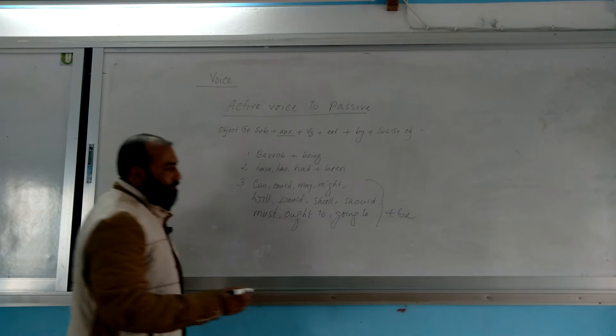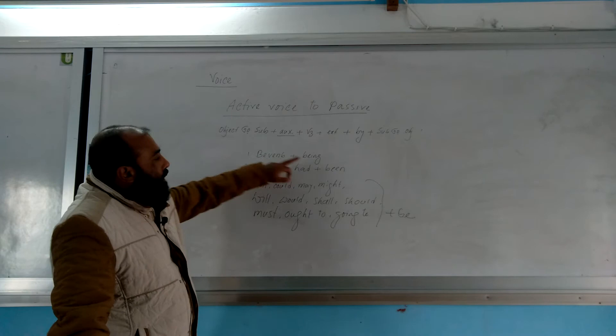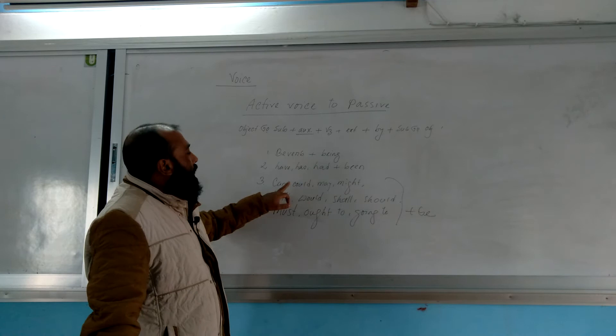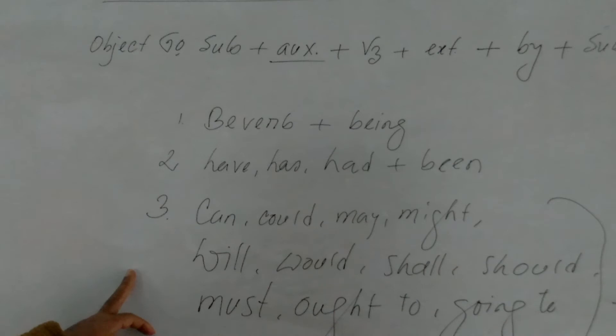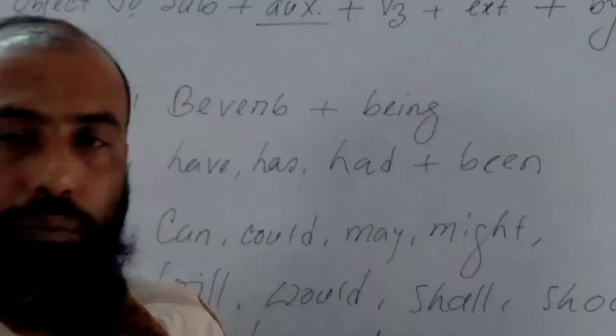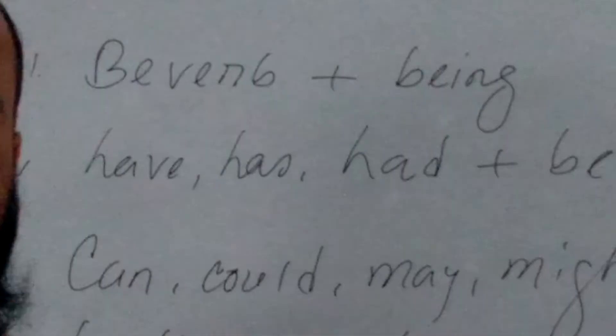If these are present, then we will add be. Pay attention: if there is be verb in the question, then we will add being. If have/has/had is there, we add been. For all other auxiliary verbs - can, could, may, might, will, would, shall, should, must, ought to, going to - we add be. Clear?